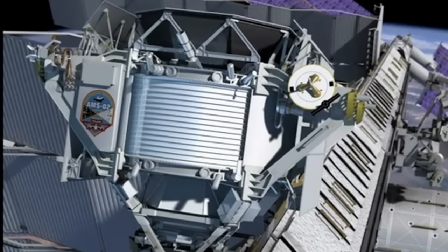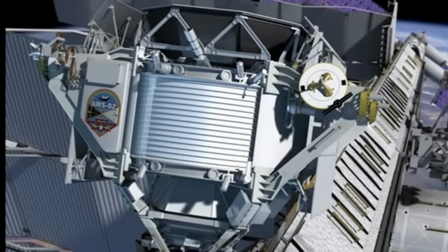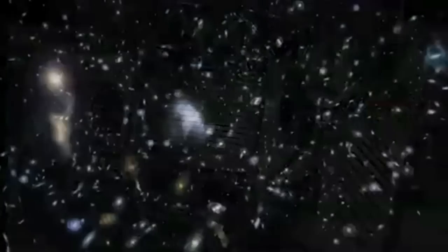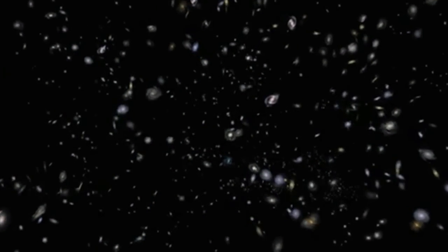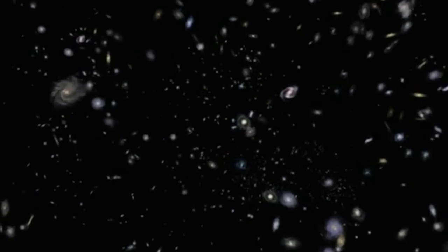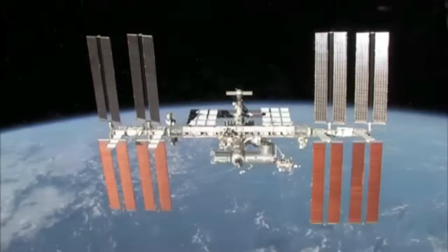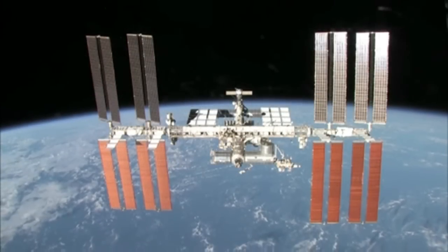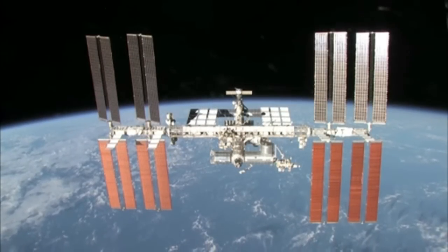If, while sifting through the cosmic sands, the AMS strikes gold, two star trackers onboard the experiment will help scientists determine from where in the universe the particle came. The AMS can send its volumes of data utilizing the station's communication link with Earth.